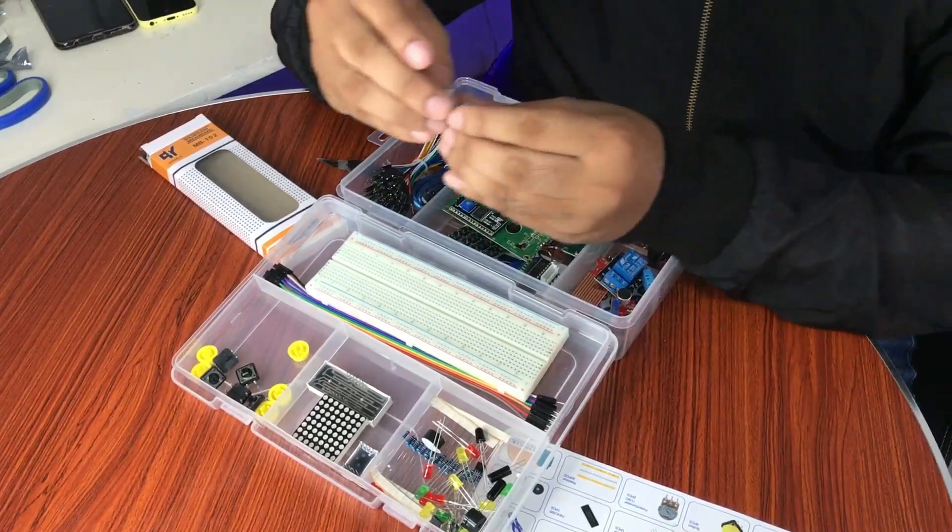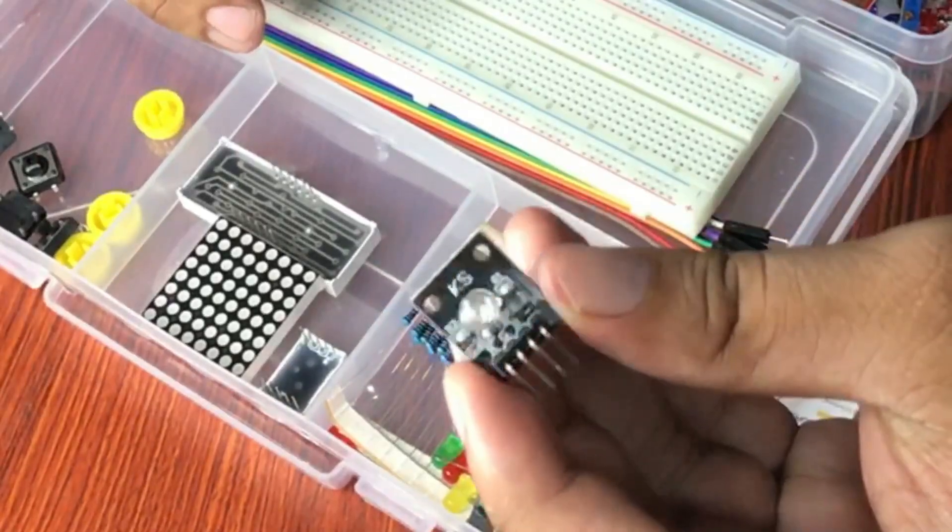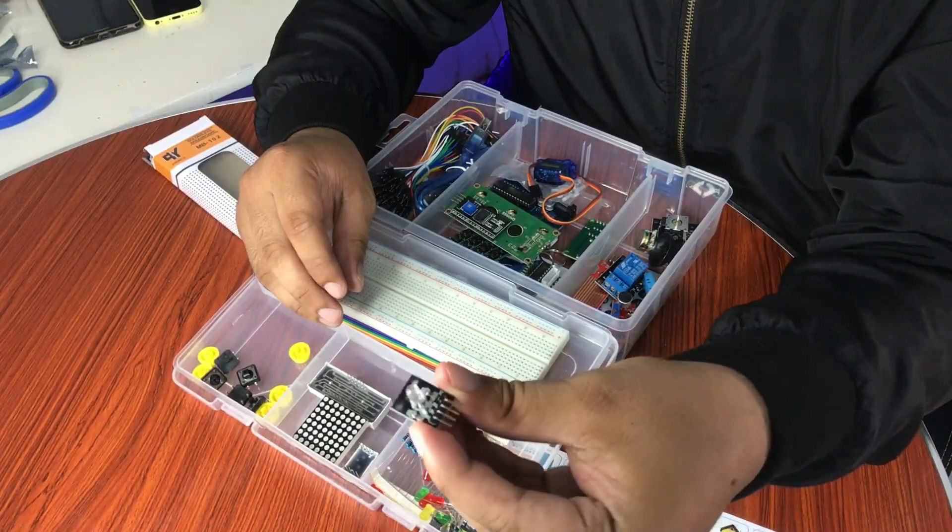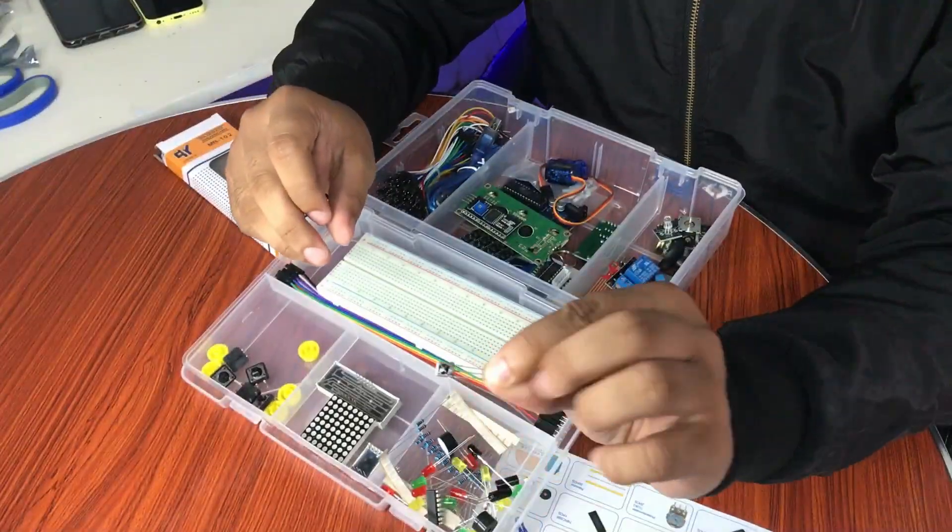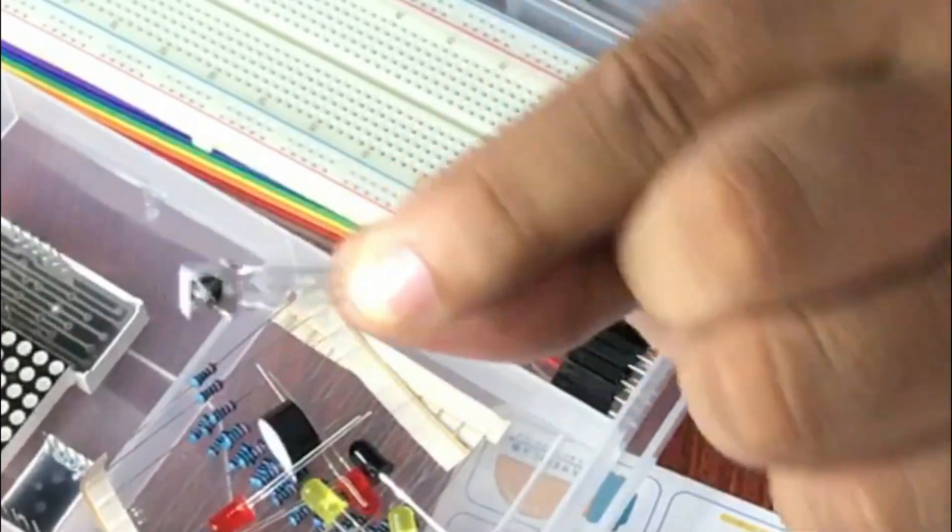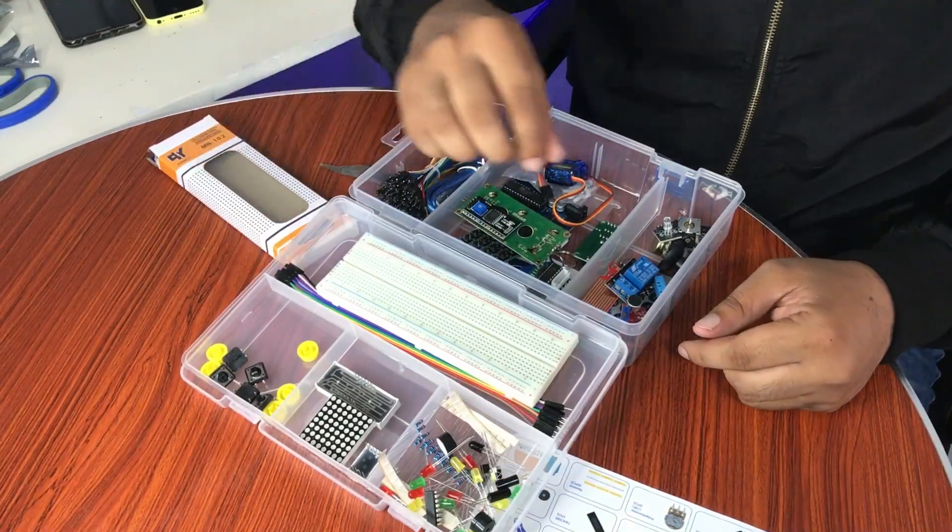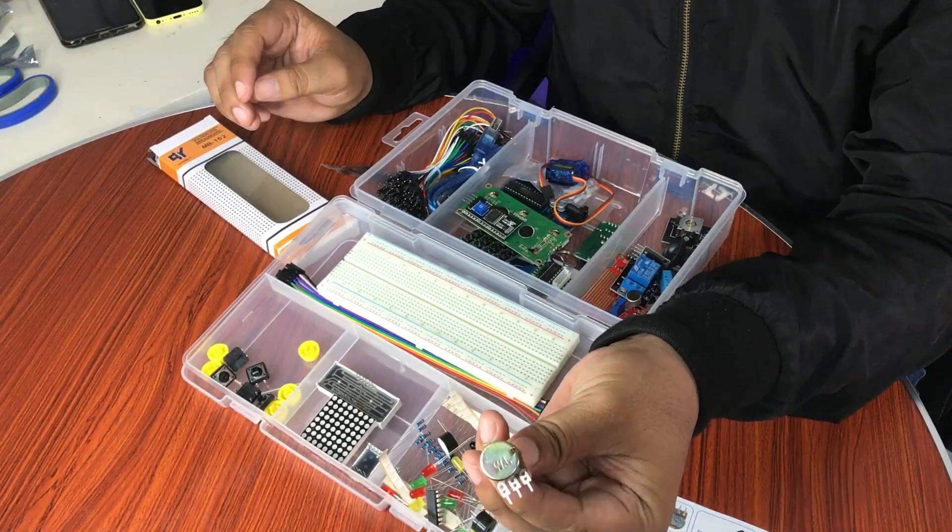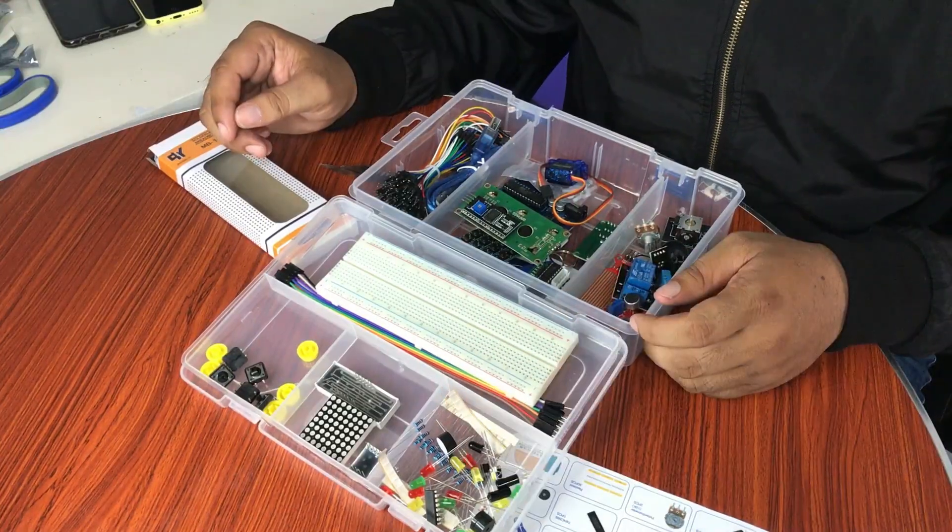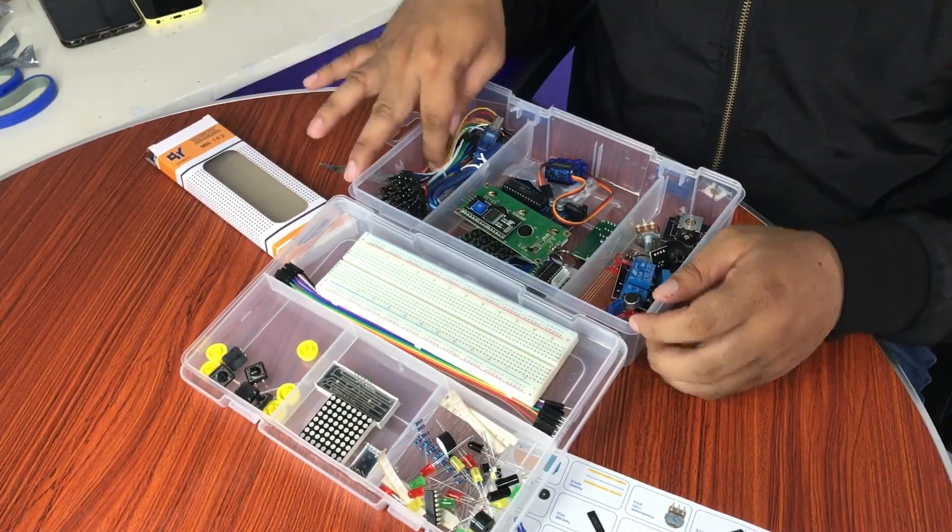This is the RGB module. So this is the IR receiver sensor, this one. 10k potentiometer. The 9 volt battery connector.